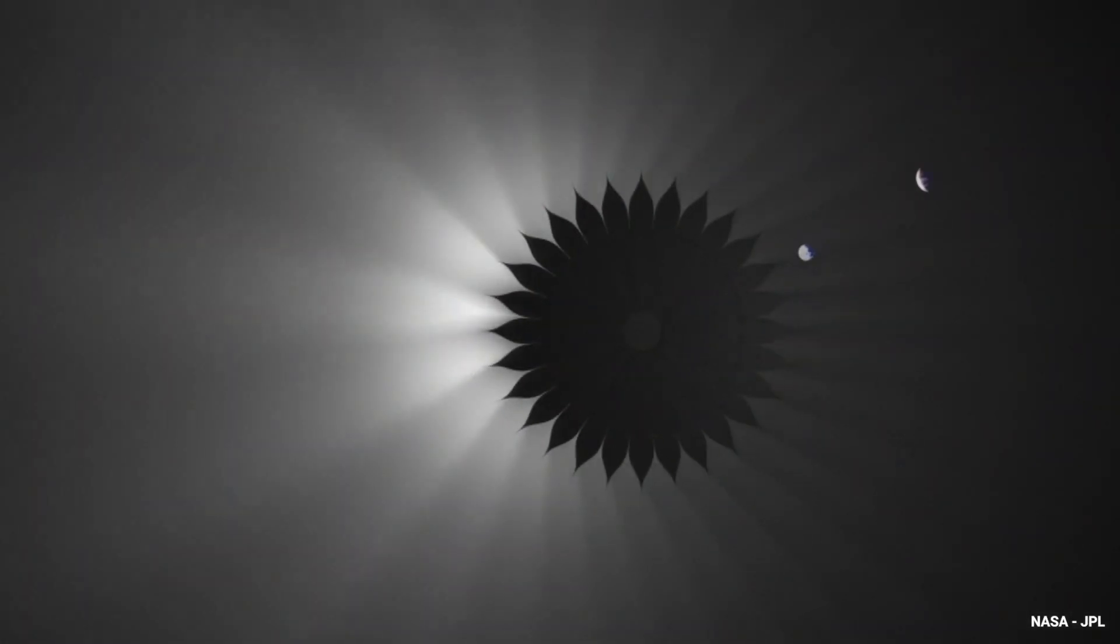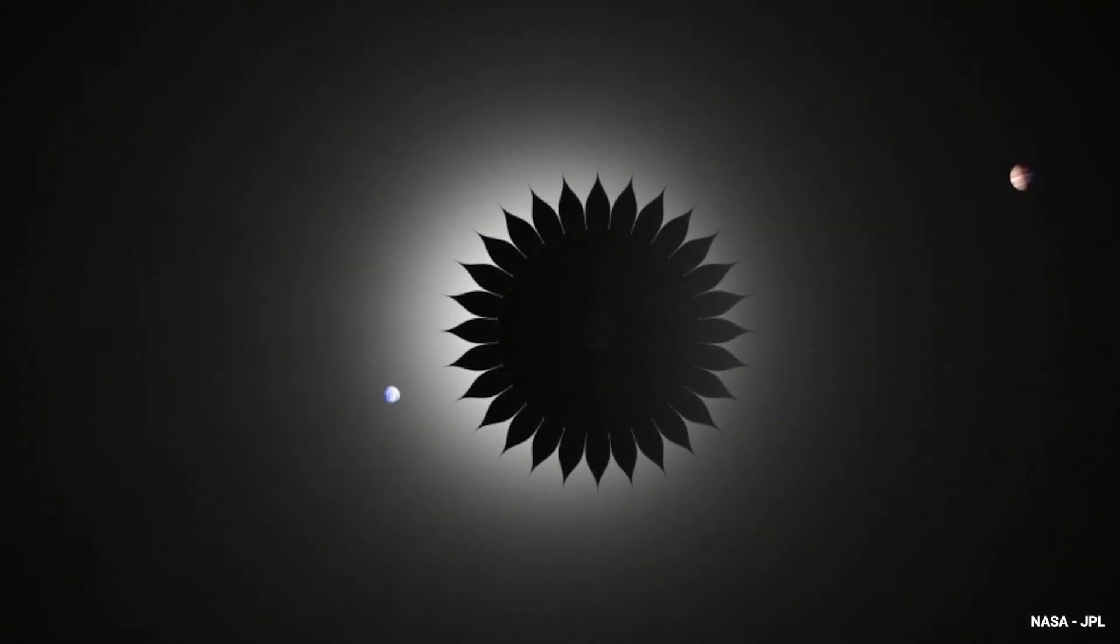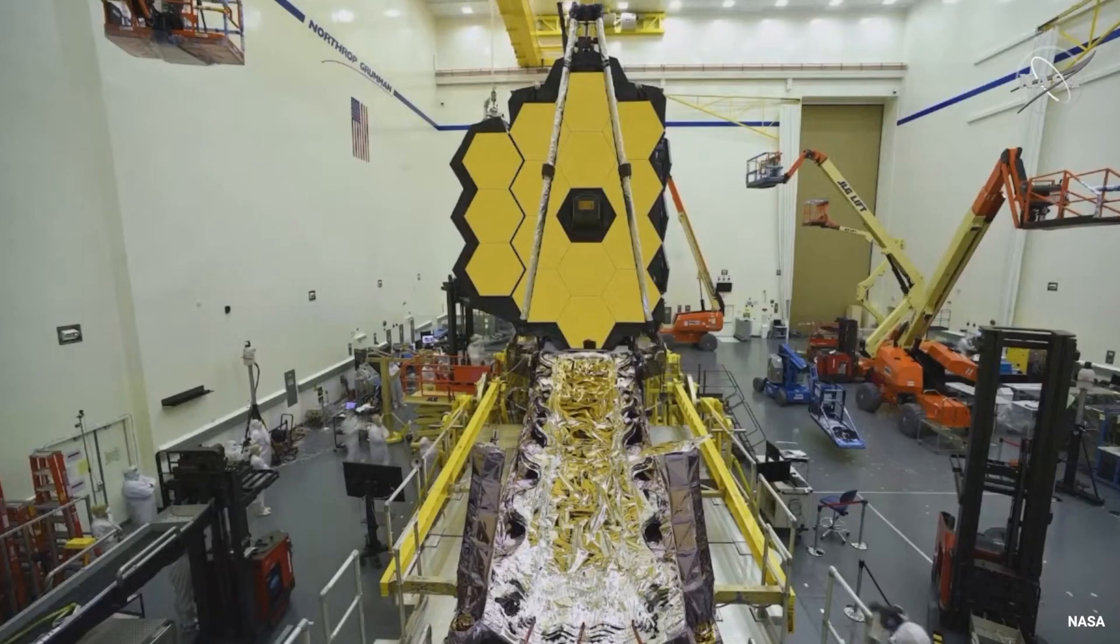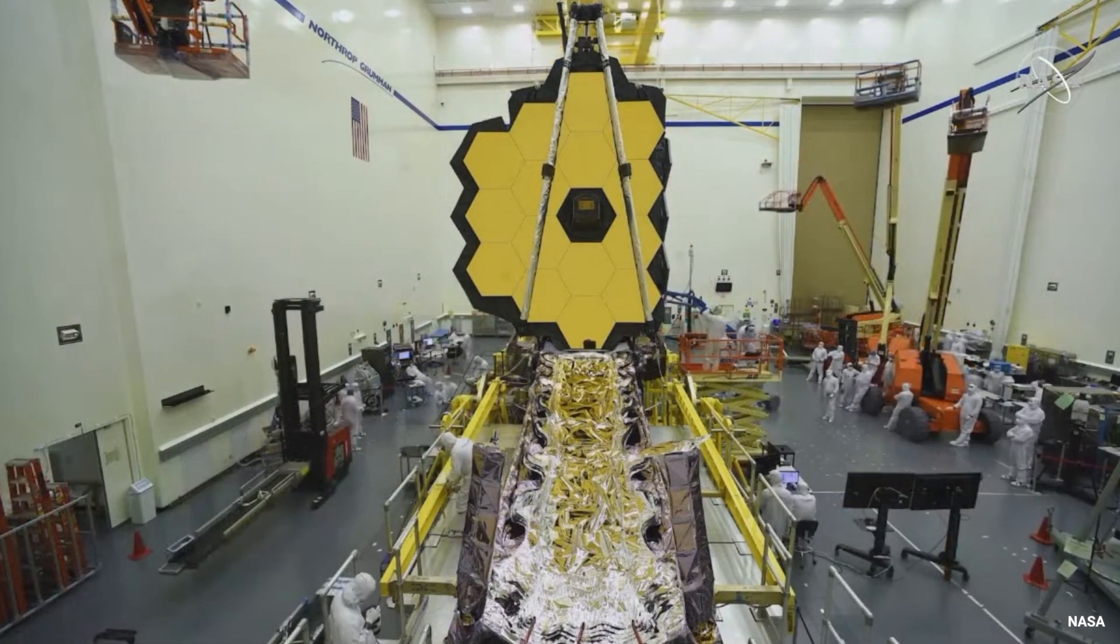Once in space, it will unfurl to help space telescopes see better by blocking interfering light from neighboring stars. Even the mirrors of the James Webb Space Telescope were folded to fit inside the rocket that launched it.